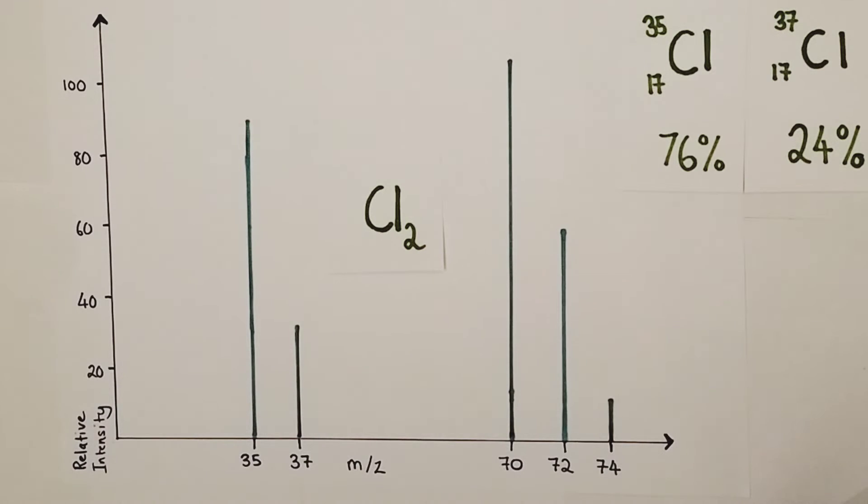What different positively charged ions are producing peaks at mass charge ratios and effectively relative masses of 35, 37, 70, 72 and 74 respectively? I'm going to take you through each of those identities now.